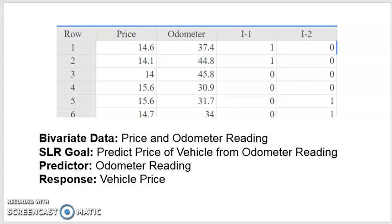This is bivariate data because I've got two quantitative variables, two pieces of quantitative information on each vehicle. Our goal of simple linear regression is to predict the price of the vehicle from the odometer reading. So the predictor is our odometer reading. What we're trying to predict is our response, which is vehicle price.